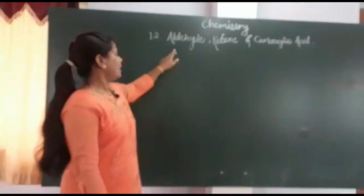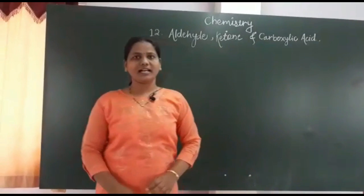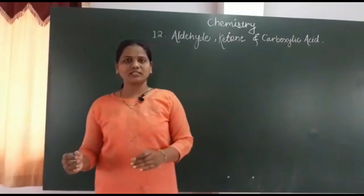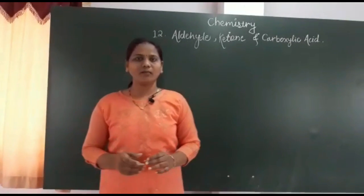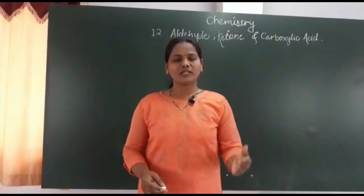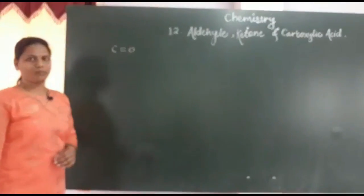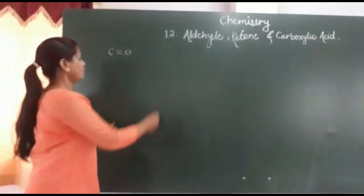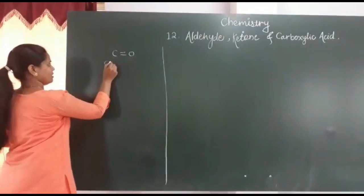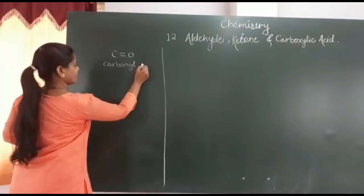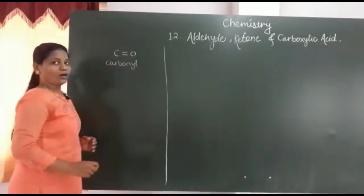Let's start with chemistry. We will start the 12th chapter from the 12th standard: Aldehyde, Ketone, and Carboxylic Acid. In the last lesson we saw carbon and oxygen bonded with a single bond — that was in the Alcohol, Phenol, and Ether chapter. In this chapter we are going to see carbon and oxygen bonded with a double bond. When carbon and oxygen are bonded with a double bond, it is called the carbonyl group, and this is one of the most important functional groups in organic chemistry.